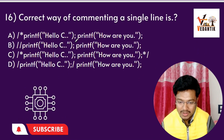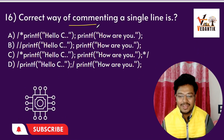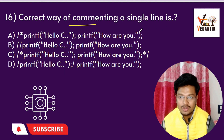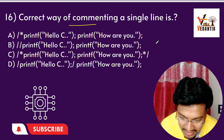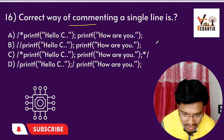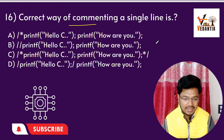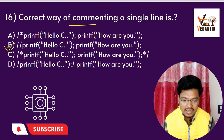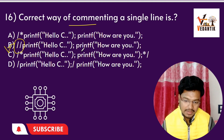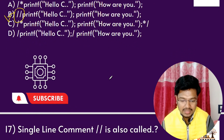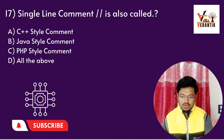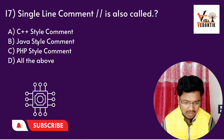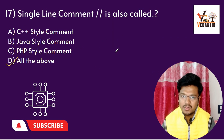Question 12: What is the correct way of commenting a single line in C? A single line comment uses double slash (//). A multiline comment uses the block style. The right answer is double slash (//) for single line comment. This is also used in Java, PHP, and C++ programming languages.